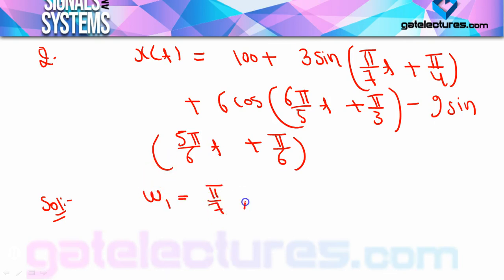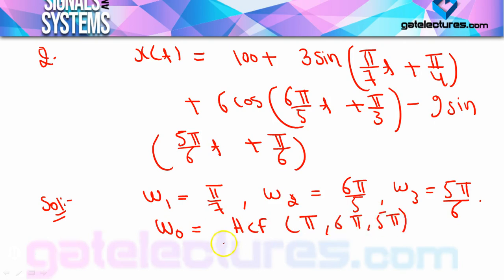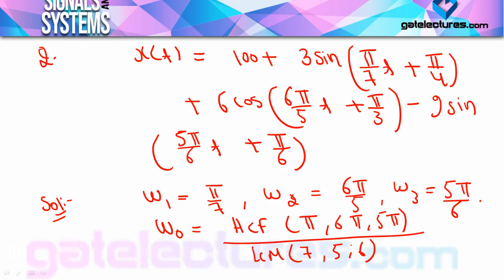ω₁ = π/7, ω₂ = 6π/5, and ω₃ = 5π/6. Now ω₀ = HCF(π, 6π, 5π) / LCM(7, 5, 6). HCF of the numerators π, 6π, 5π is π. LCM of 7, 5, 6 is 210. So ω₀ = π/210. The signal is periodic because after taking HCF as π, the remaining terms inside are integers: 1, 6, 5.